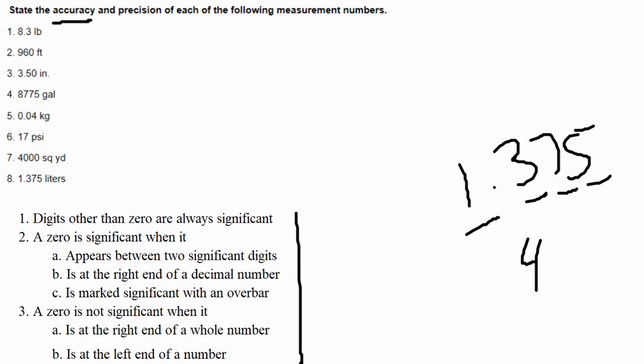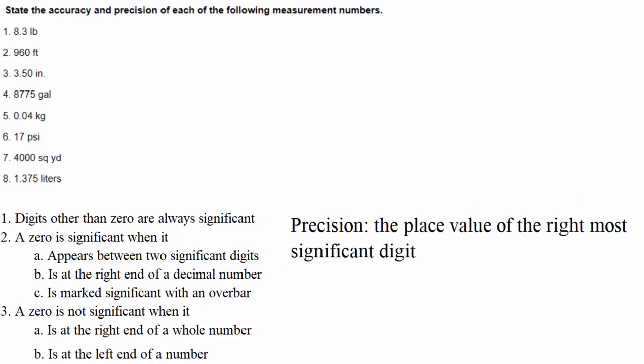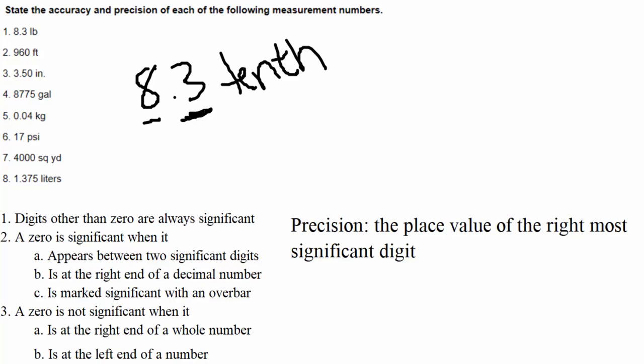Moving on to precision. Precision is about place value. After figuring out how many significant digits a number has, precision tells us: precise to what? The precision is the place value of the right-most significant digit. Going back to 8.3 — it had two significant digits, and the right-most significant digit is the 3, which is in the tenths place. So this example is precise to the tenths.